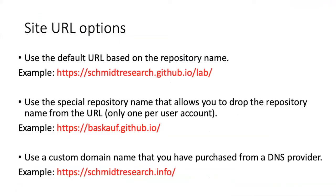There is actually a third option, and this is perhaps the best option if you're not able to get an account name that's as good as the one that I have. If you have a common last name you're probably not going to get it because someone else probably already has it. However, if you go to a DNS provider like GoDaddy or any of the other ones that sell custom domain names, you can use that custom domain name within your GitHub website.